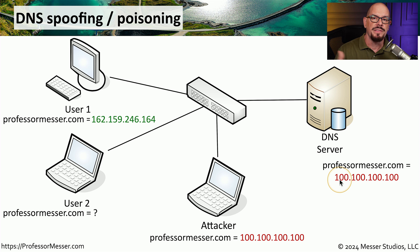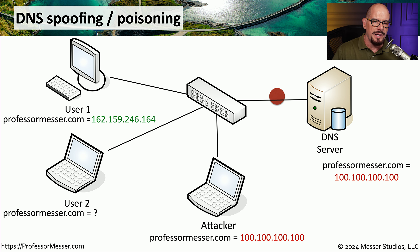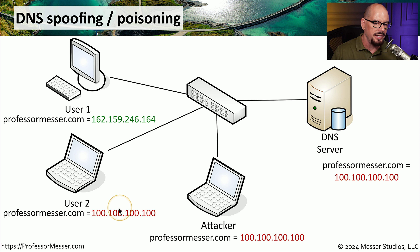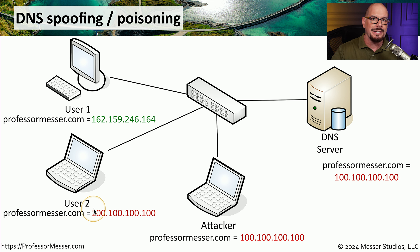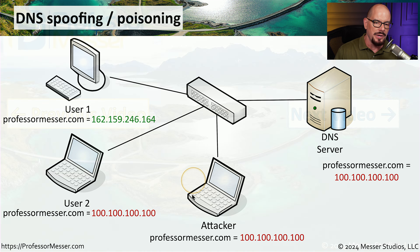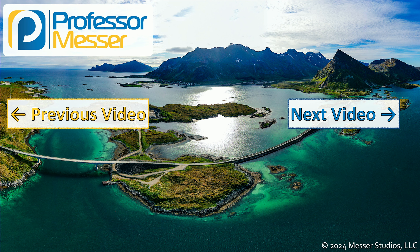Now all subsequent requests to the DNS server for professormesser.com will return the poisoned address instead of the legitimate address. User two will make that request to the DNS server, and the response does indeed send the spoofed address to the user two workstation, which is now stored in the user two cache. When that user wants to communicate to professormesser.com, instead of going to the legitimate IP address for that web server, they will be redirected to a web server running on the attacker's IP address.